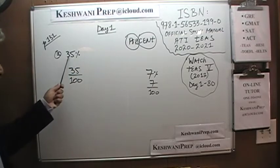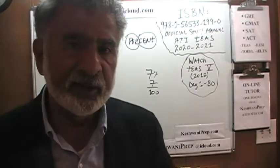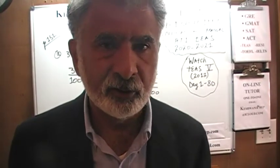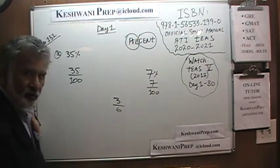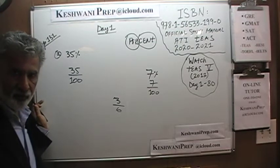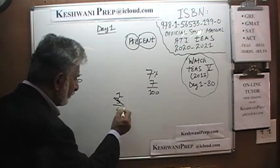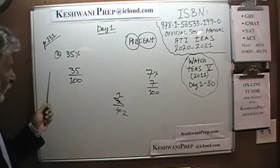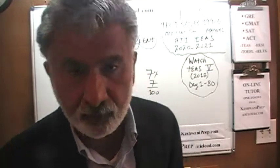If the question asks us to convert this percentage into a fraction, in many cases the answers will be reduced to the lowest form. For example, if the answer is 3 over 6, you won't find that in the answer choices — it will be in reduced form. Divide top and bottom by 3: 3 becomes 1 and 6 becomes 2, giving 1/2. Same here — do we find a common factor between 35 and 100? Yes: both are multiples of 5.